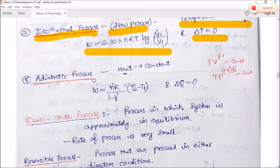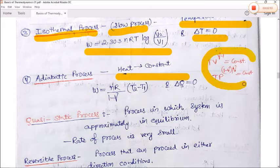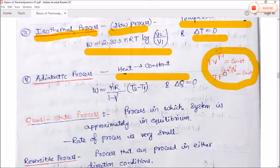The adiabatic process — heat is constant. Work done W = nR/(1 − γ) × (T2 − T1), and since heat is constant, ΔQ = 0. The adiabatic relations are: TV^(γ−1) = constant and TP^((1−γ)/γ) = constant. Derivations for these can be found in 12th-grade textbooks.